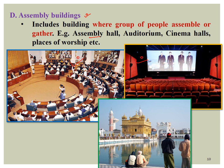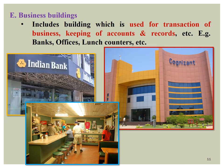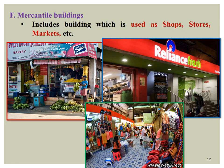Assembly buildings include assembly halls, auditoriums, cinema halls, places of worship, and more. Business buildings are used for transaction of business, for example banks, offices, and business centers. Mercantile buildings are used as shops, stores, and markets — including malls, small shops, and street markets.